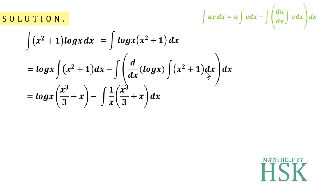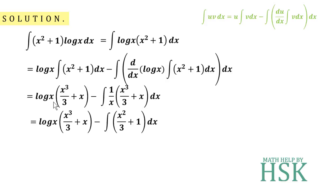...the differentiation of log(x), which is 1/x, multiplied by the integration (x³/3 + x). These terms can be simplified further. When I multiply 1/x inside the bracket, x³/3 becomes x²/3, and the x/x cancels to give 1. So this becomes (x³/3 + x)·log(x) minus the integral of (x²/3 + 1). I just need to integrate this bracket to solve the question.